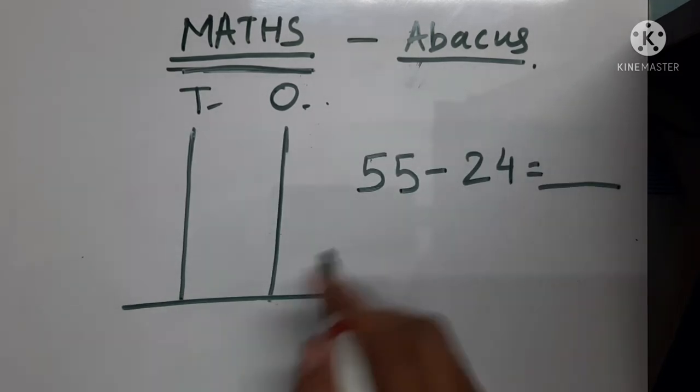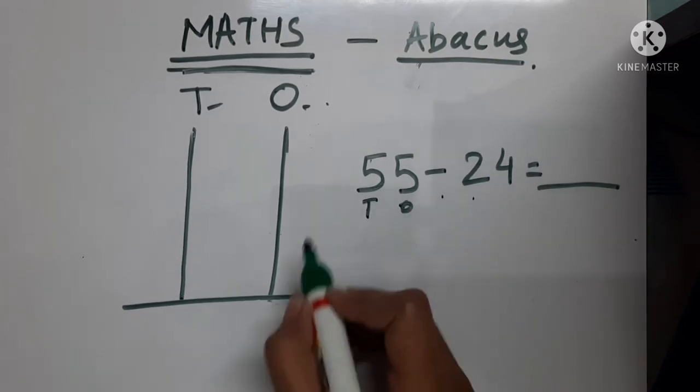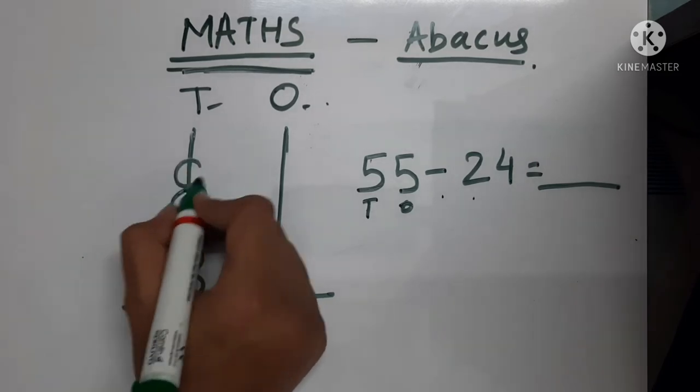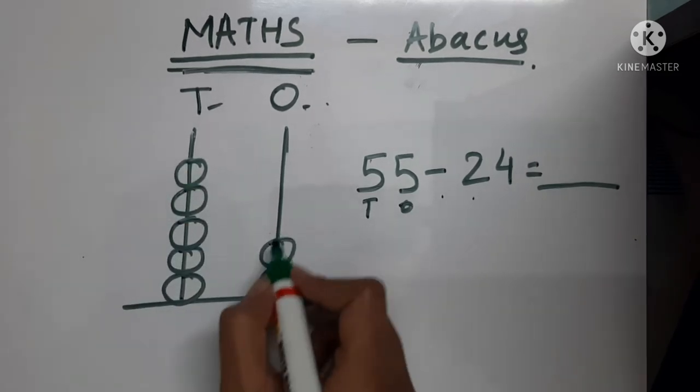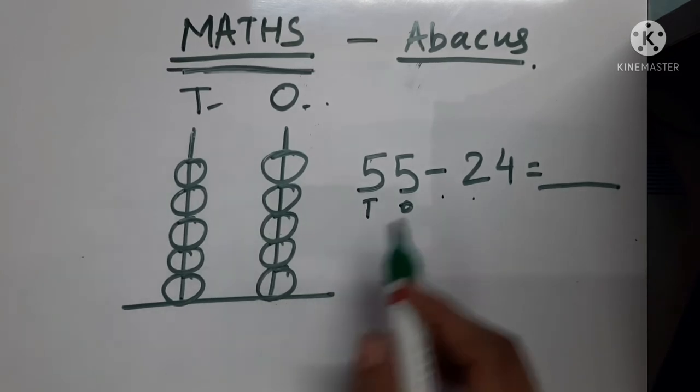Now, the next question is 55 minus 24. So, tens and ones, both are 5. 1, 2, 3, 4, 5 here and 1, 2, 3, 4, 5 here. What will we remove?